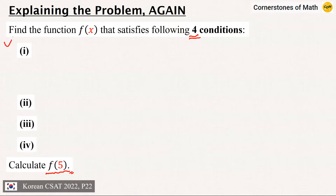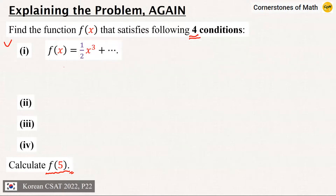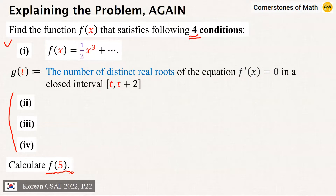Now let's take a look at those four conditions. The first one was quite easy to catch right at the beginning of the problem: f(x) is a cubic function with leading coefficient 1/2, so we can say that f(x) = (1/2)x³ + something. Now, in order to address the other three conditions, we must first define the function g(t). As you've already seen, g(t) is defined as the number of distinct real roots of the equation f'(x) = 0 in the closed interval [t, t+2]. We will take a closer look at this function g(t) later, so for now, even if this definition looks confusing, let's just move on.